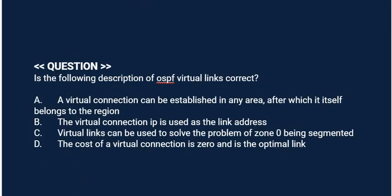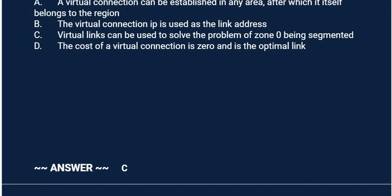Next question: Is the following description of OSPF virtual links correct? Option A: A virtual connection can be established in any area, after which it itself belongs to that region. Option B: The virtual connection IP is used as the link address. Option C: Virtual links can be used to solve the problem of zone 0 being segmented. Option D: The cost of a virtual connection is 0 and is the optimal link. Correct answer is Option C.